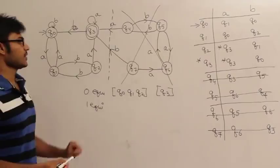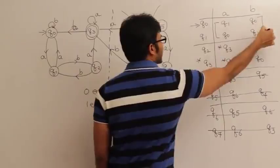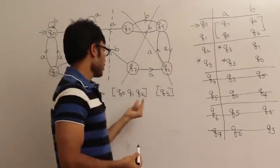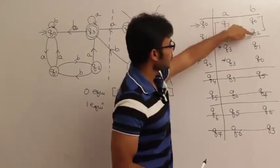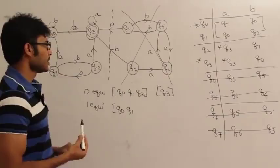Let us see if Q0 and Q1 are one equivalent or not. How can you check it? Take Q0 and Q1 and see their transitions. Q0 and Q1, see how they are behaving, right? Q0 and Q1 on small a are going to Q1 and Q0 - both are in the same group. Q0 and Q1 are one equivalent.